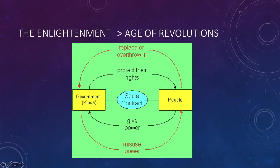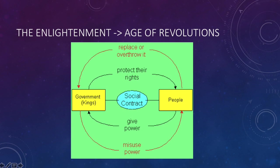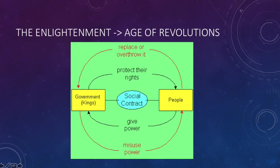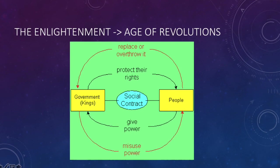Although the social contract theory propagated by Thomas Hobbes was not the most extreme variant — the most extreme forms come from Montesquieu and Locke — it still contributes to destabilizing governments throughout Europe and eventually the world.